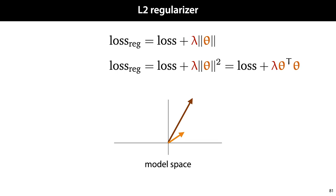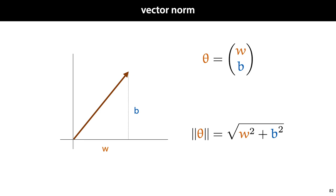Often for the L2 loss, we add the square of the length of this vector because that is easier to work with. This is equal to adding the dot product of the parameter vector with itself. Here's what that looks like for a simple two-parameter model. If we have two parameters w and b, then our parameter vector is just the vector of these two numbers together. And the L2 norm of that vector, the length of this arrow in model space, is the square root of the squares of all these parameters summed together.